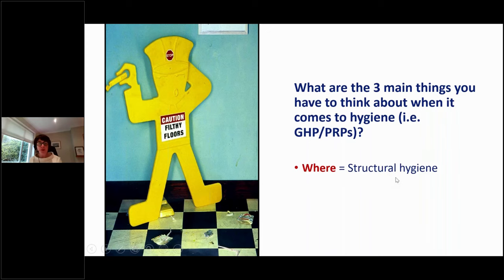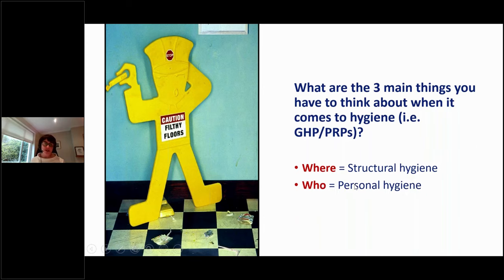The three main elements of GHP or PRPs can be thought of using these questions. The 'where': the structure, building, and room you work in must be appropriate and you must be able to control pests. The 'who': food handlers must be trained appropriately, report illness, and not handle food if they have gastrointestinal symptoms. They must wash their hands thoroughly before handling food after touching their face. The 'how': operational hygiene — preventing cross-contamination between raw foods and ready-to-eat foods.